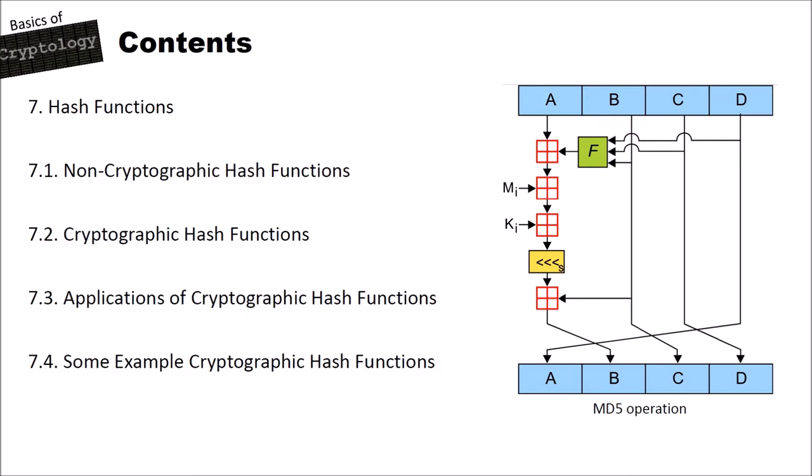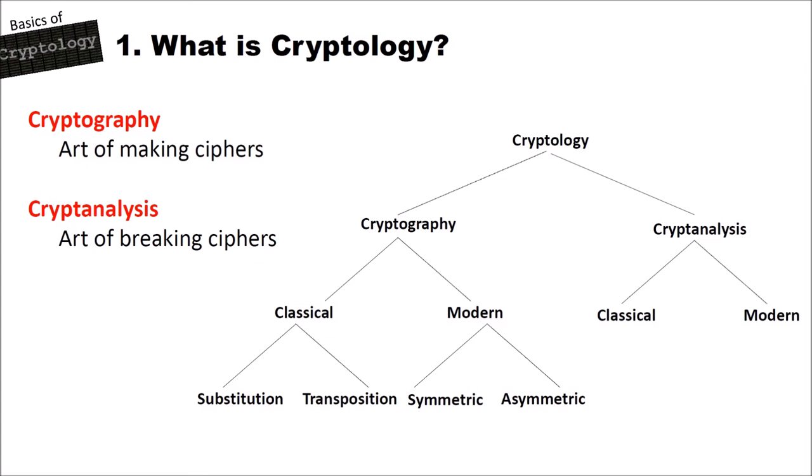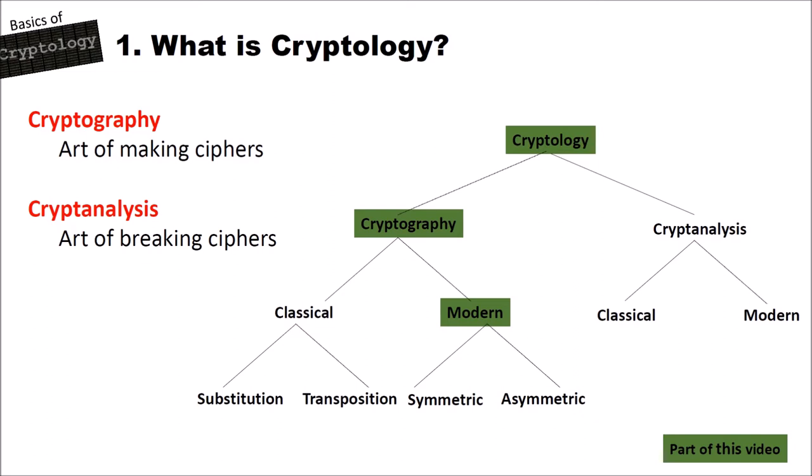As with all videos of the basics of cryptology series, I want to have a look at where we are right now with respect to cryptology. In this video we are at cryptology, cryptography, modern cryptography. We are not in symmetric or asymmetric modern cryptography — that refers to ciphers. We are right now with modern hash functions.